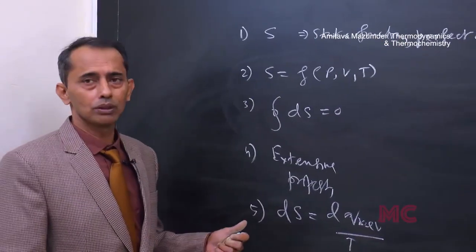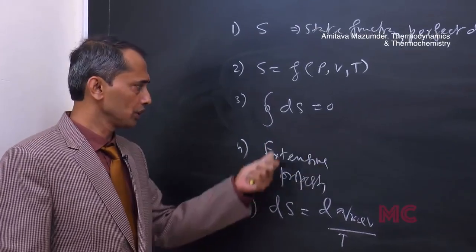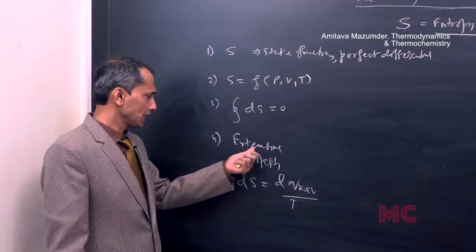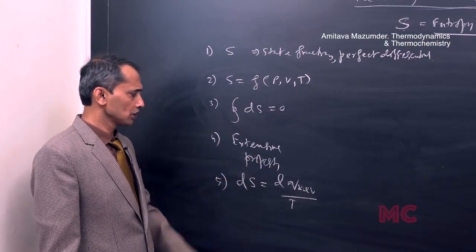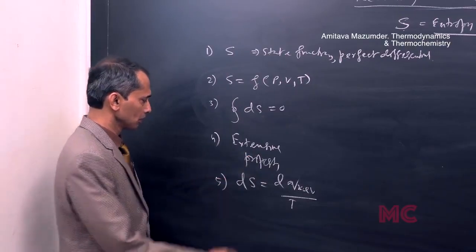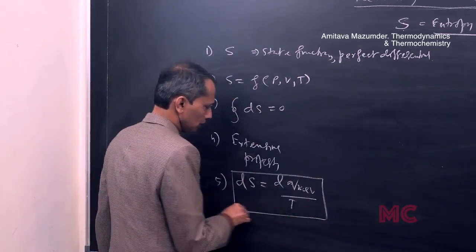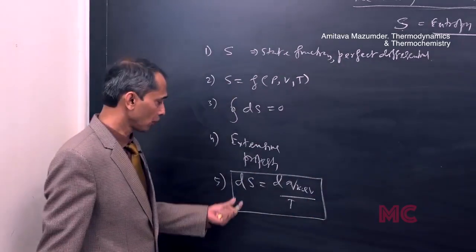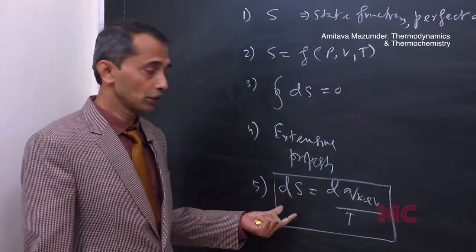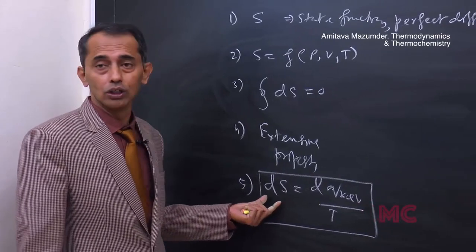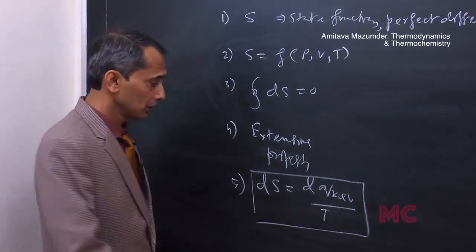S is a function of pressure, volume, or temperature for gases. For a whole cyclic process, dS equals zero. It is an extensive property and dS equals dQ reversible divided by T — this is the definition of change in entropy. Absolute entropy can also be found.